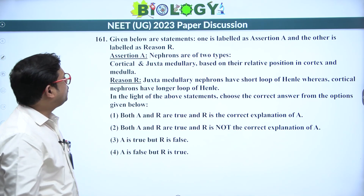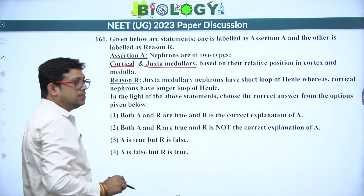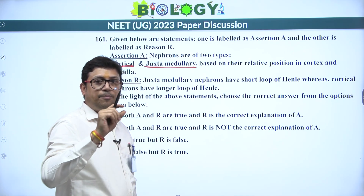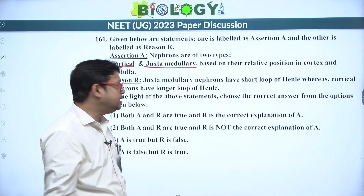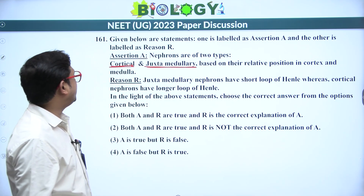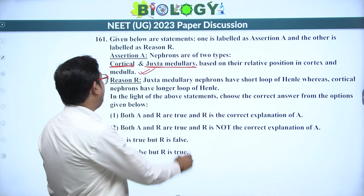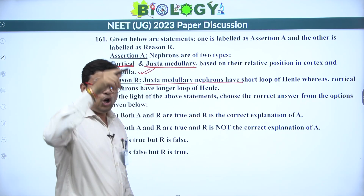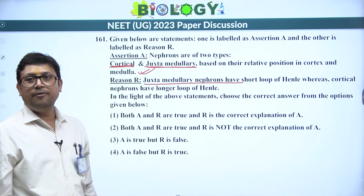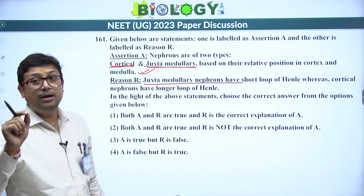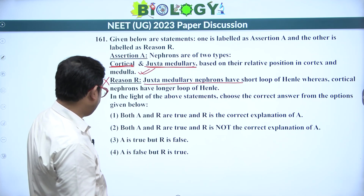Next: nephrons are of two types — cortical and juxtamedullary — based on their relative position. Cortical nephrons are present in the cortex; juxtamedullary nephrons are partly in the cortex and partly in the medulla. This statement is correct. However, juxtamedullary nephrons have a long loop of Henle going deep into the medulla, not a short one — so the reason is false. Assertion is correct, reason is wrong — answer is 3.